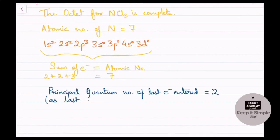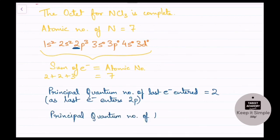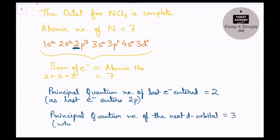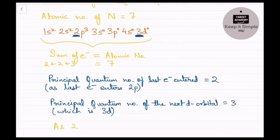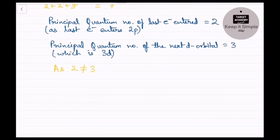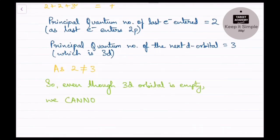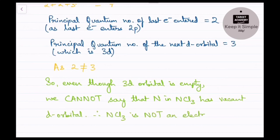The last electron of nitrogen enters 2p, so the principal quantum number of the last electron entered is 2. The next d orbital after 2p is 3d, which has principal quantum number 3. Since 2 is not equal to 3, the first condition is not satisfied. Even though the 3d orbital is empty, we cannot say that nitrogen in NCl3 has a vacant d orbital. So NCl3 is not an electrophile on this basis. I hope this concept is clear — if you have any doubts, ask in the comments below.